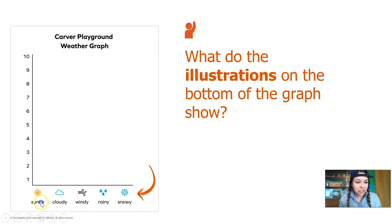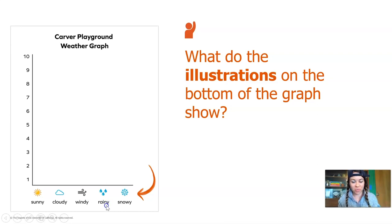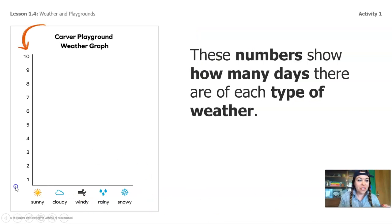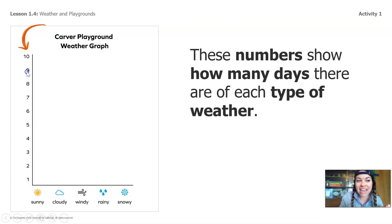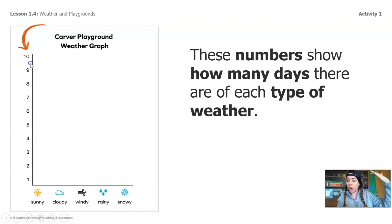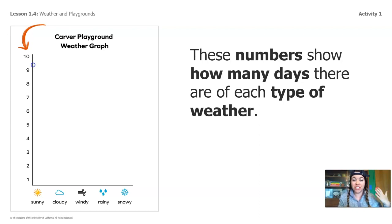Now check out these pictures across the bottom — those are all of the different weather conditions that we learned about in the first few lessons. Now check out these numbers that are going up the side of the graph. It starts at number 1 and goes up 2, 3, 4, 5, 6, 7, 8, 9, 10. So our graph starts at 1 and goes all the way up to 10. These numbers show how many days there are of each type of different weather.